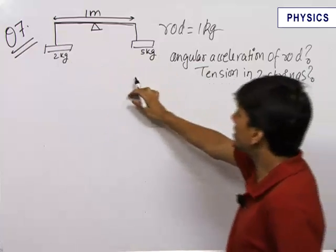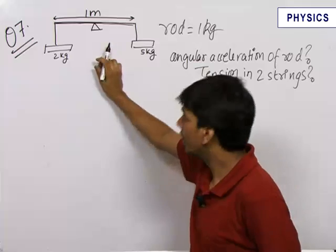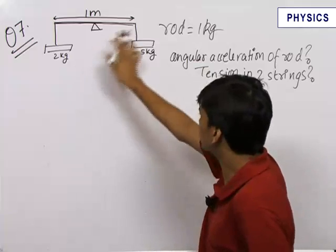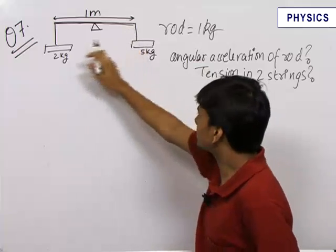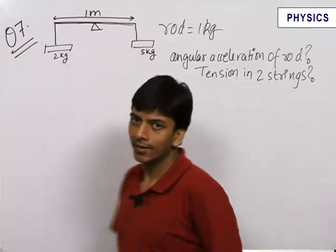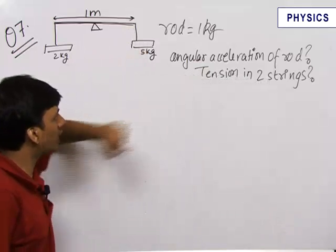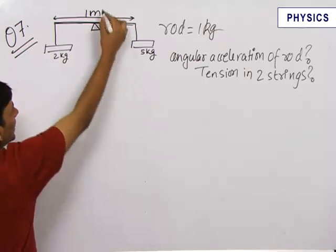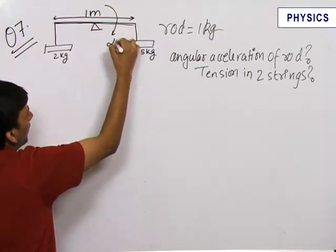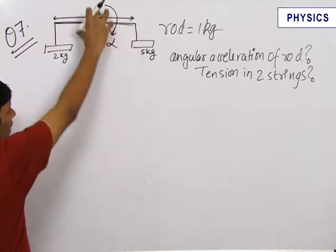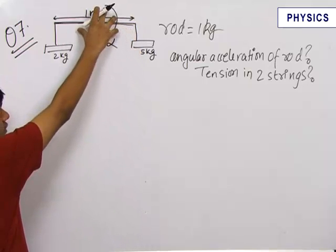We need to find out initially when the rod was horizontal, the angular acceleration of the rod and the tensions in the strings joining 2 kg and 5 kg. So let us find out the first part first. Let the angular acceleration be alpha. The angular acceleration, initial angular acceleration of this rod is alpha.